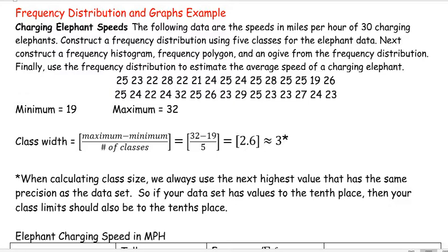Next, construct a frequency histogram, frequency polygon, and an ogive from the frequency distribution. Finally, use the frequency distribution to estimate the average speed of a charging elephant. So here are the different speeds of our elephants given, and they're not in any order or anything like that.